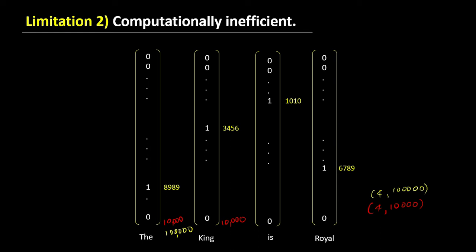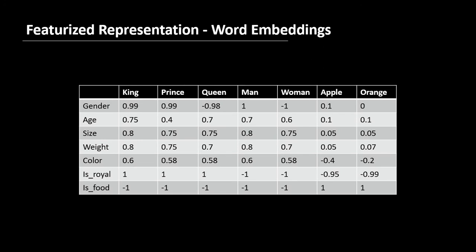So, is there any way we can overcome these two limitations? Or is there any way our computer can understand the relationship between words? For example, if I have words such as 'orange' and 'apple', can our computer know that these two words are related because they both are fruits? Well, that's where word embeddings come into picture. With a very simple technique, we can make a computer realize that words are similar in some context.